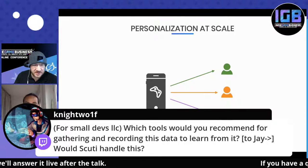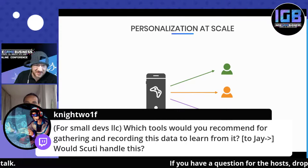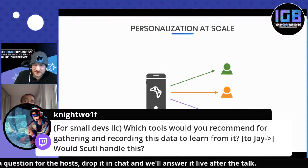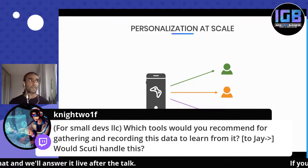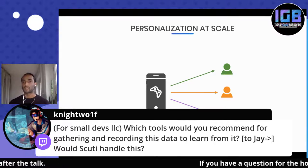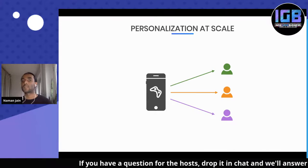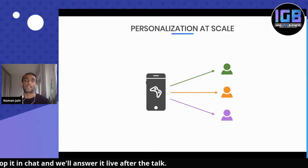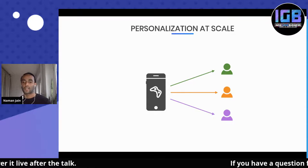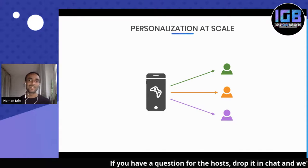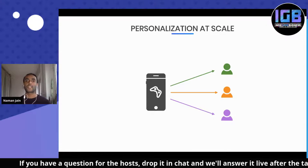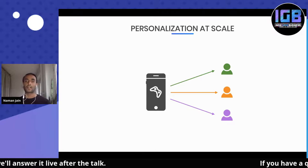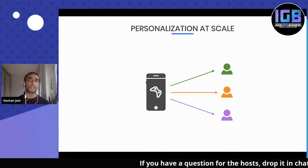The next question: for small devs, which tools would you recommend for gathering and recording data to learn from it? It depends on your game engine. Firebase is good for Android or iOS games using their SDK. If you're using Unity — which is quite common for mobile games — you could use Delta DNA, or Alecular, to do A-B testing in Unity. The point is that depending on your game engine, there are A-B testing tools specialized for that engine.